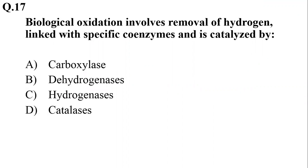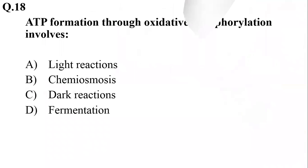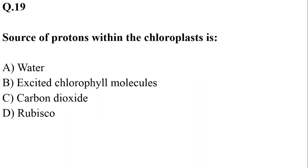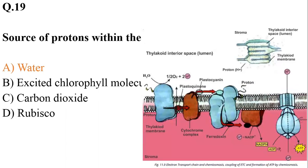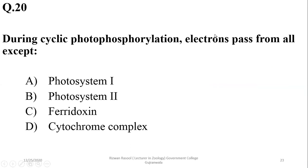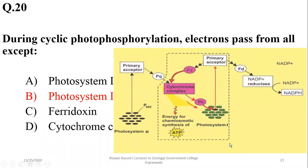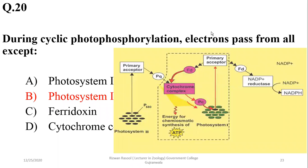Photolysis is due to an enzyme hydrolase and sunlight. Which of the following types of mammalian cells does not carry out oxidative phosphorylation? It is obviously an erythrocyte, which is missing the membrane-bounded structures in the latest stages. Biological oxidation involves removal of hydrogen linked with specific enzymes and is catalyzed by dehydrogenases. ATP formation through oxidative phosphorylation involves chemiosmosis in mitochondria, and the source of protons within the chloroplast is water. During cyclic photophosphorylation, electrons pass from all except photosystem 2, because photosystem 2 is concerned with the Z-scheme or non-cyclic photophosphorylation only.